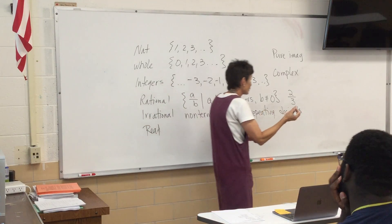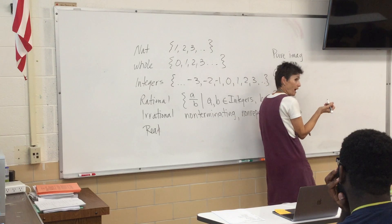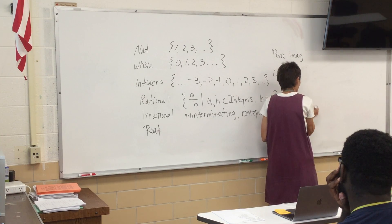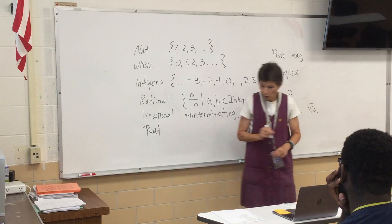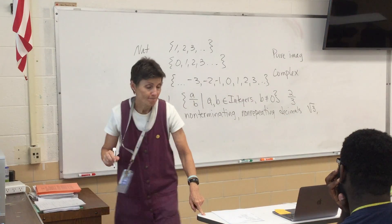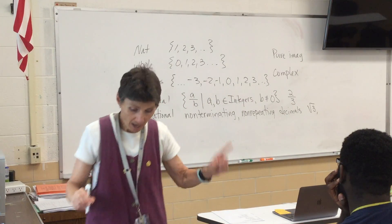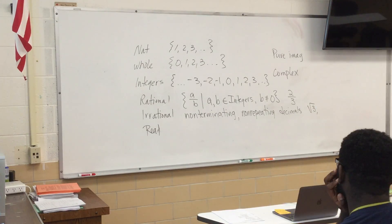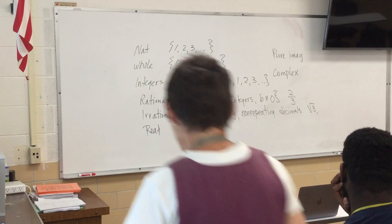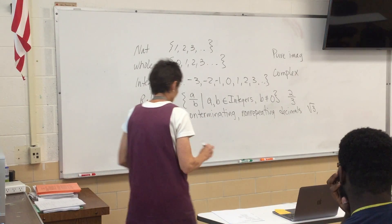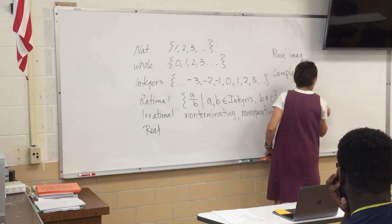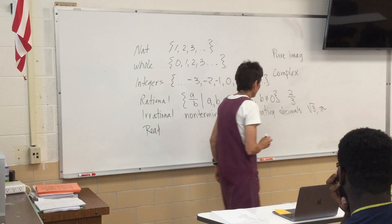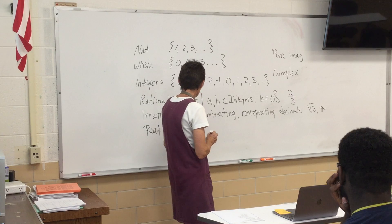So irrational is going to include things like radicals. What else? Pi. Pi — the most famous irrational number is probably pi. Those are a couple of examples.